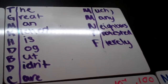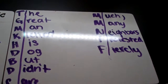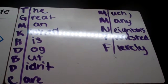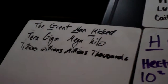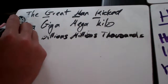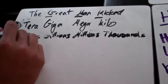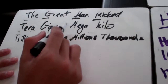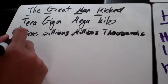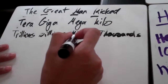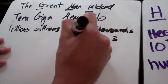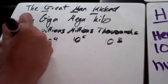This mnemonic device starts with Tera, which is in the trillions, and goes to Femto, which is in the quadrillionths. To start, we have 'The Great Man Kicked.' Each of the starting letters means something: T stands for Tera, G stands for Giga, M stands for Mega, K stands for Kilo. Tera stands for trillions, Giga for billions, Mega for millions, and Kilo for thousands. In scientific notation, these are 10 to the 3rd, 10 to the 6th, 10 to the 9th, and 10 to the 12th.